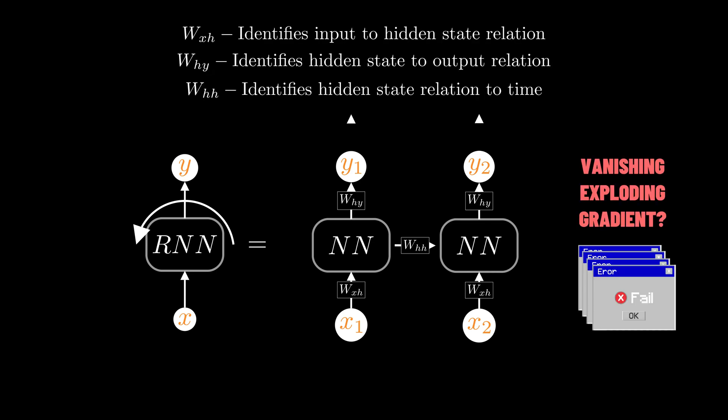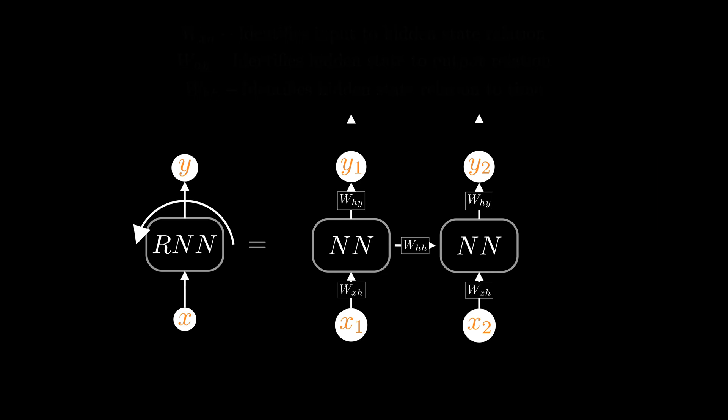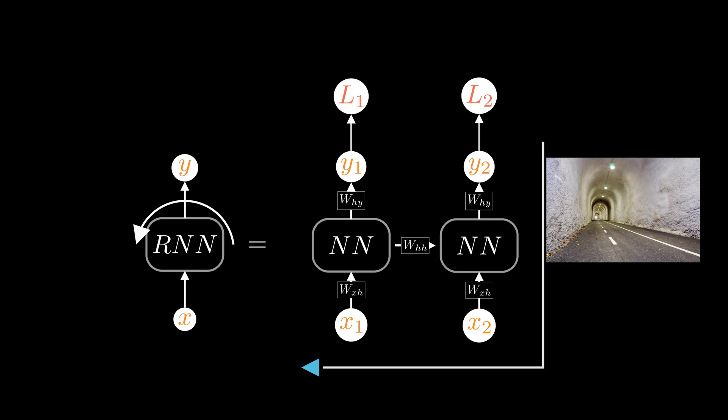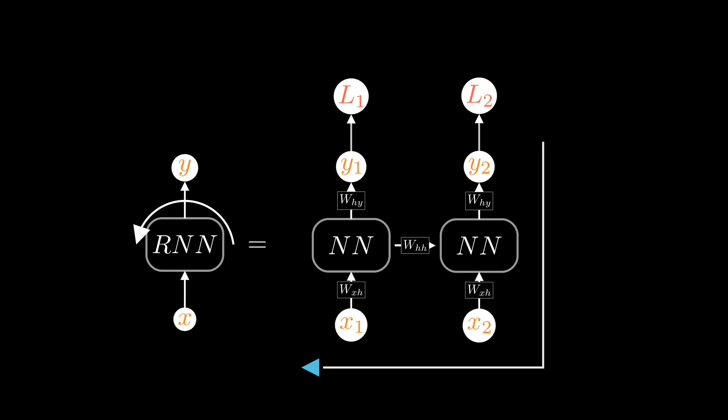However, they faced vanishing and exploding gradient problems, explained in my previous video. And since now backpropagation went back in time, parallelization was impossible, making it challenging to learn long-range dependencies and maintaining an efficient architecture.